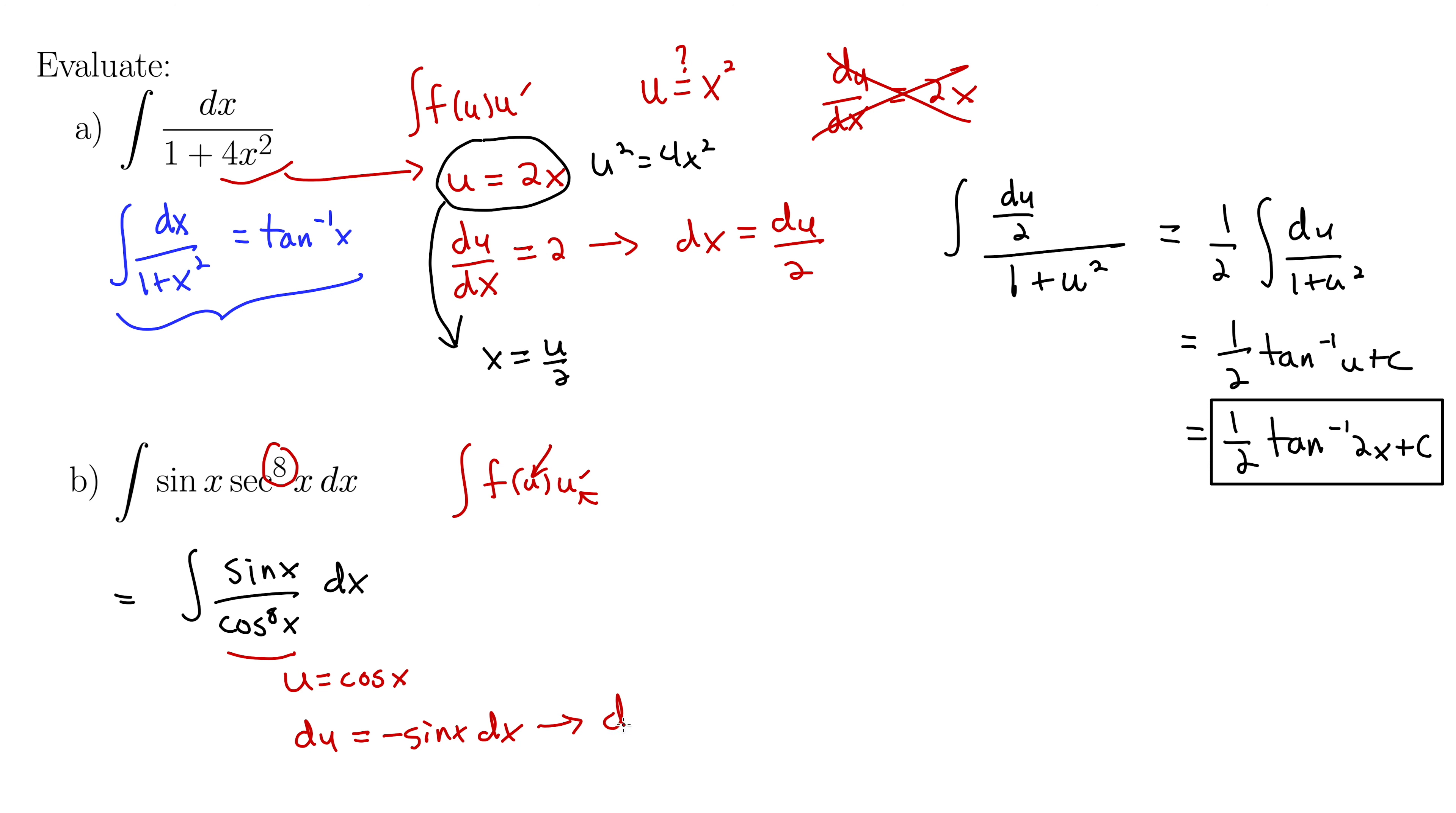Solve this for dx. dx is then du over negative sine x and plug in right there for dx. So this gives us a new integral. When we do that, note that these sine x's will cancel out with each other. So what we'll be left with is a negative out front and then we have du over u to the 8th. So a much simpler integral once we do the substitution.